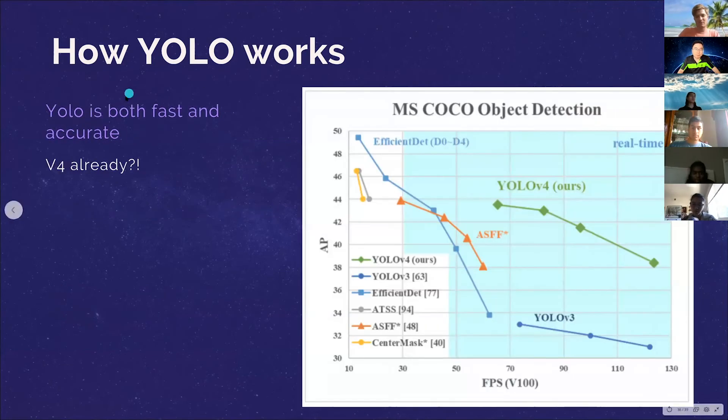And YOLO is both fast and accurate. So what are we plotting here is AP, right, average precision, average precision versus frame per second. So of course, more frame per second you have, the better, more average precision, the better. So you want to be in this quarter, right? So this is real time kind of stuff.